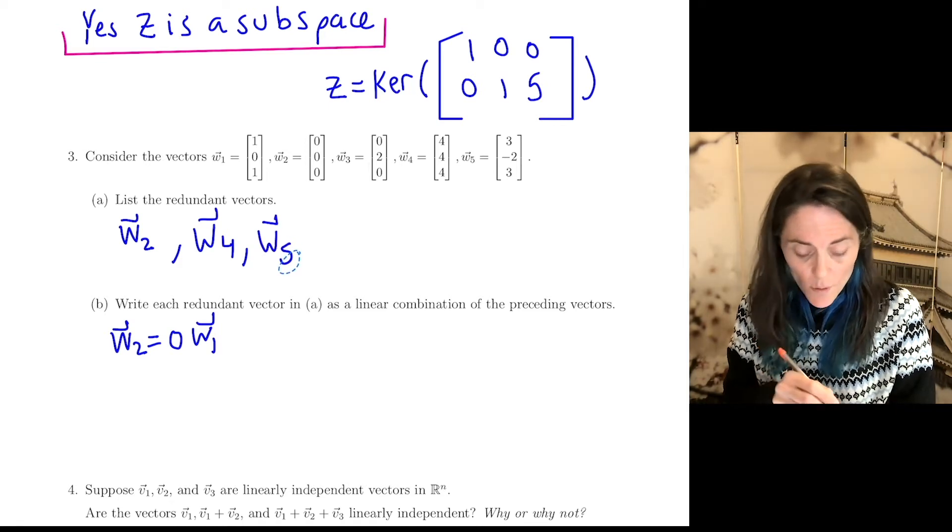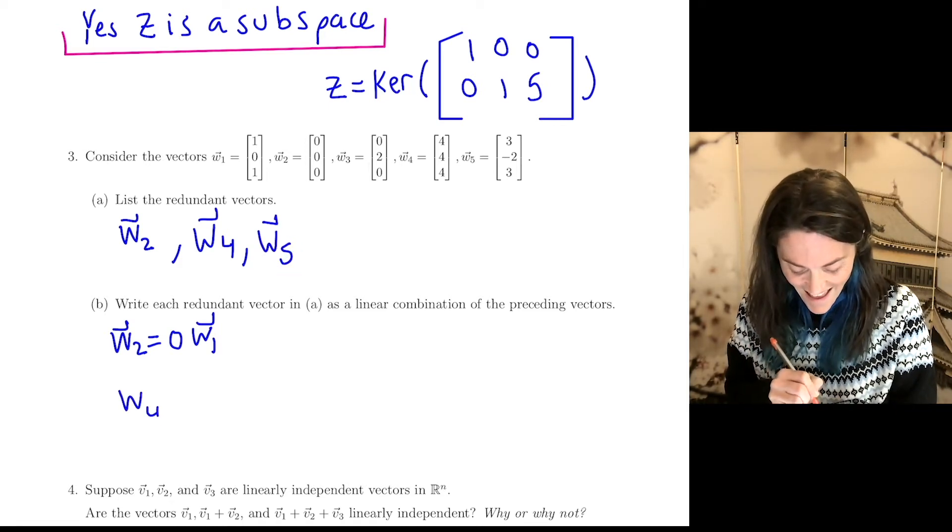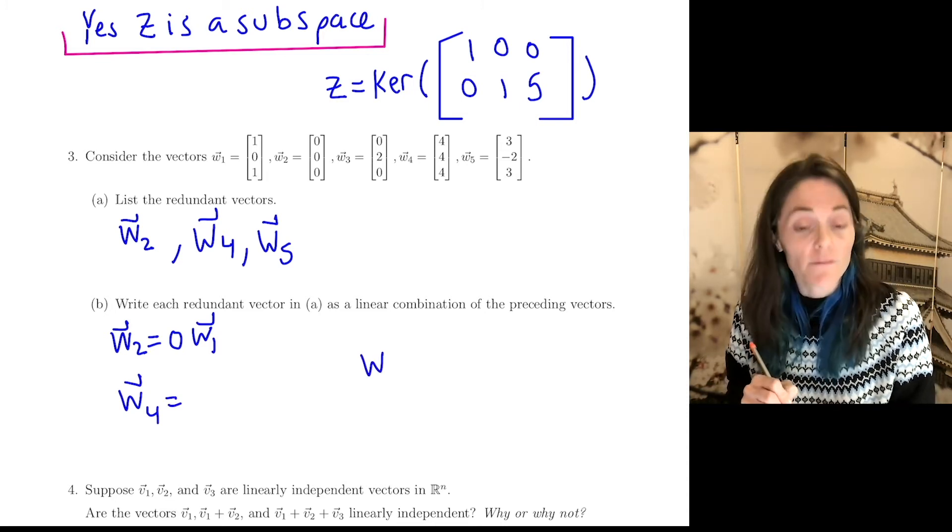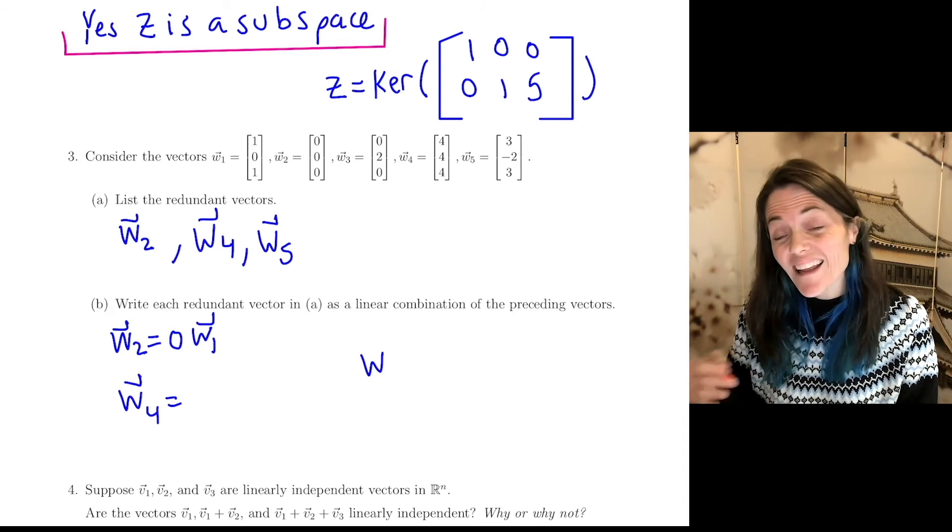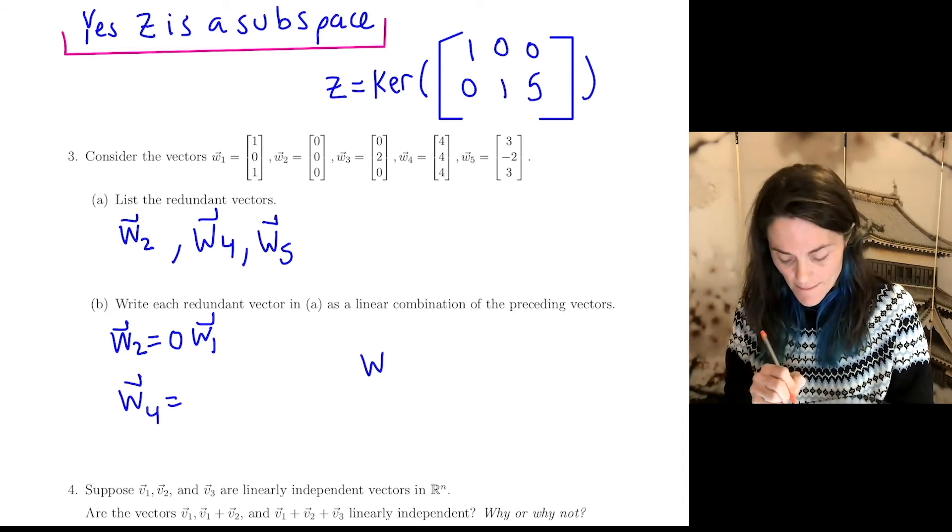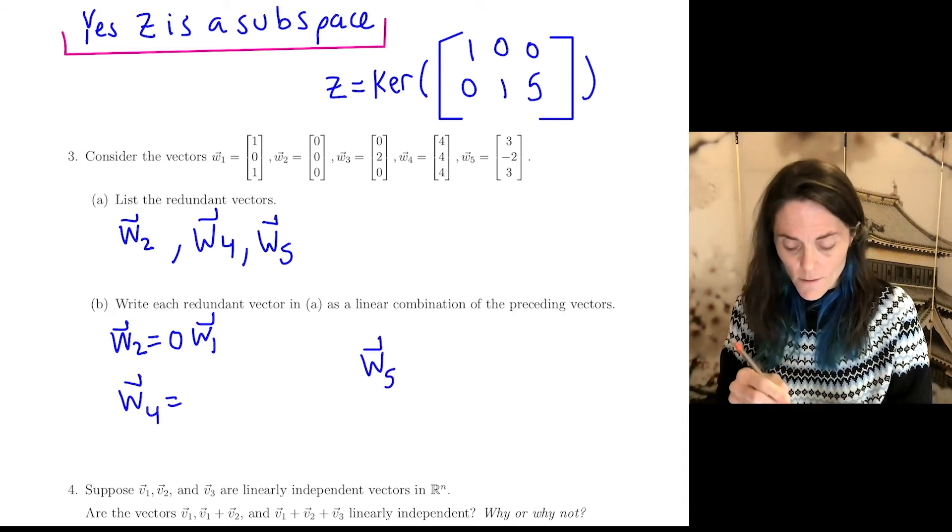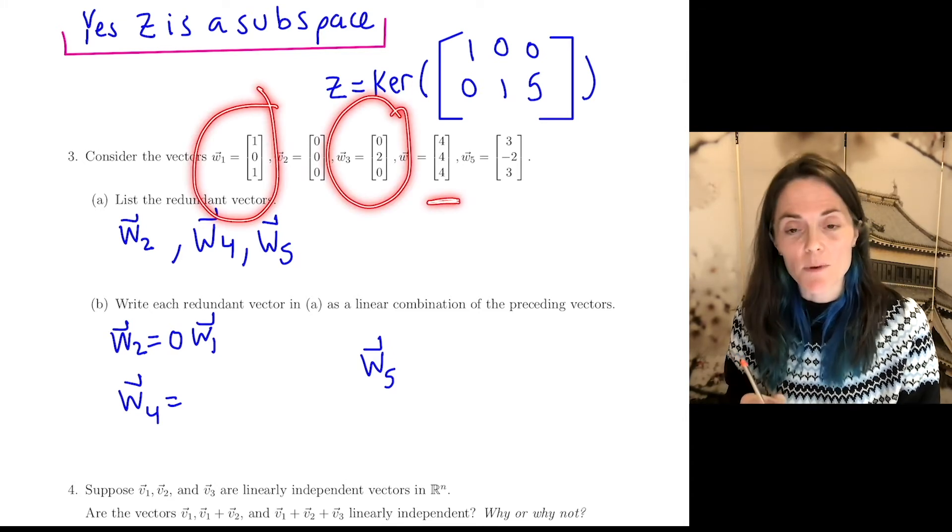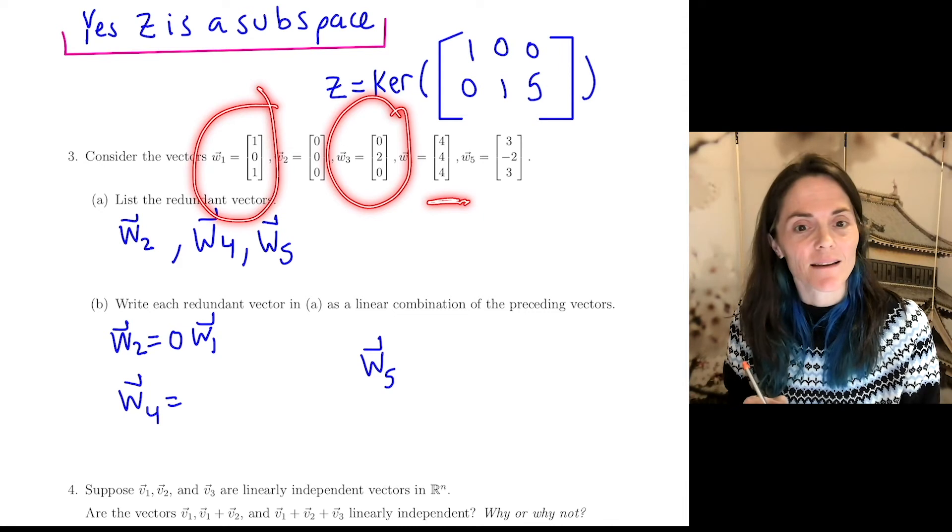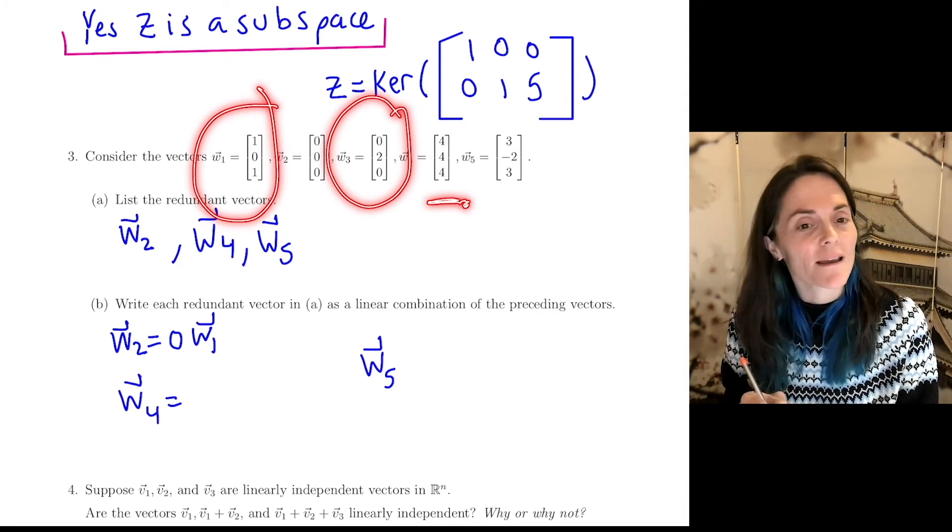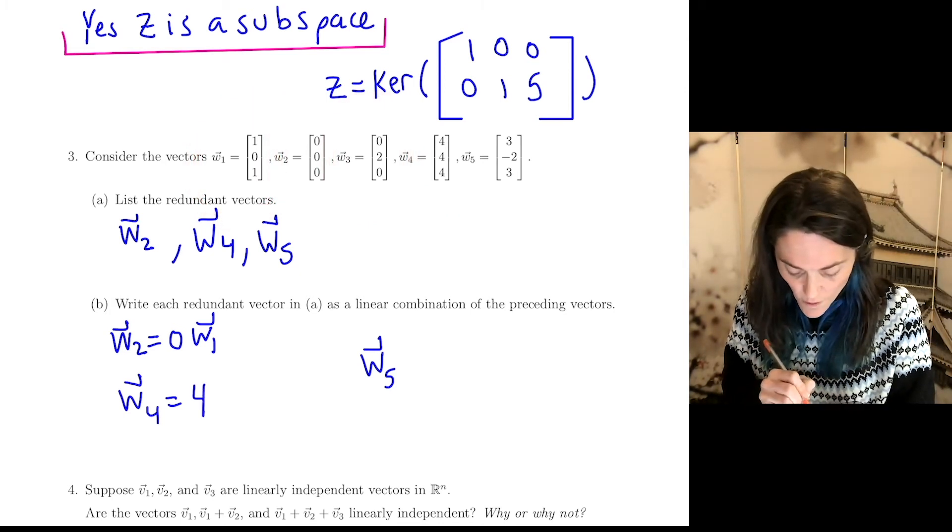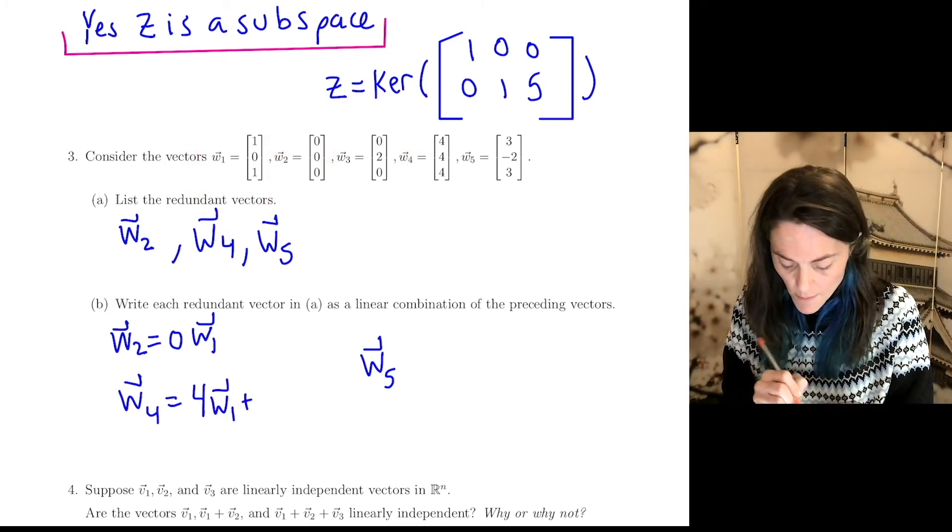So let's write both W4 and W5 as a linear combination of W1 and W3. Here's W1, here's W3, and here's W4. This we can do by inspection. We see W4 is 4W1 plus 2W3. So this is 4W1 plus 2W3.